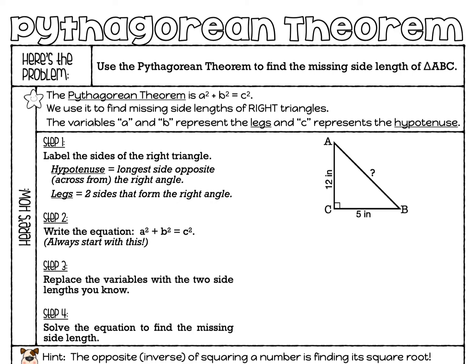The problem is: use the Pythagorean Theorem to find the missing side lengths of triangle ABC. The Pythagorean Theorem is A squared plus B squared equals C squared, so let's underline or highlight this formula because we're going to be using it a lot in this topic. We use the Pythagorean Theorem to find missing side lengths of right triangles.